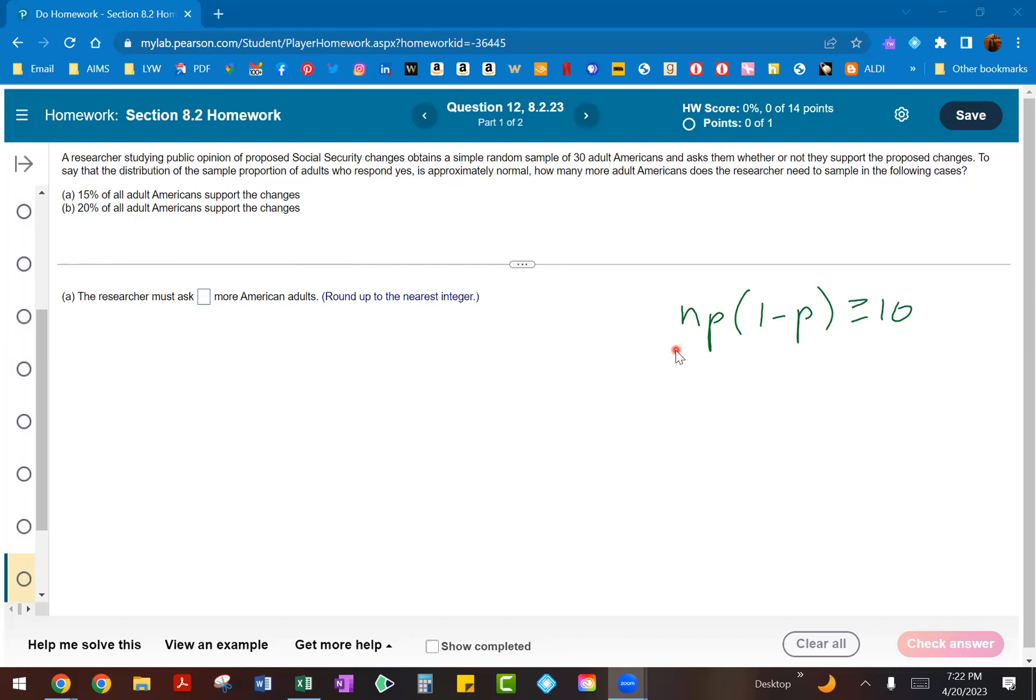So normally, when we are trying to check and see if a distribution is normal, we use this formula where you take n, which is your sample size, p, which is your proportion, and then 1 minus p. And the idea is when you multiply these three numbers together, that number has to be either greater than or equal to 10. So we are going to rewrite this formula because we already know the p value, that's the 15% and 20% from parts A and B. And the only other number we don't know is n, which is what we're trying to find, because we want to know how many more adult Americans should the researcher add so that they can have a normal distribution.